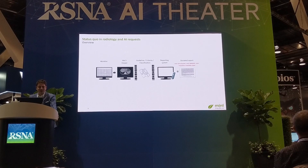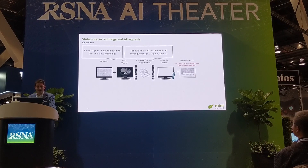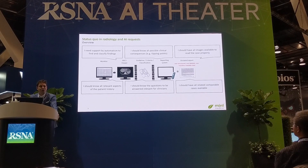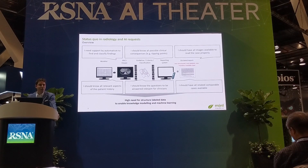In addition to this workflow, in recent years a lot of AI requests have emerged. For example: support by automation to find and classify findings, knowledge of clinical consequences like tipping points, access to all relevant images and patient history, the clinical question from referring physicians, and all related comparable cases. Whatever approach you take under the umbrella of AI — whether knowledge modeling or machine learning — they all require data. But in the current workflow, you do not generate structured data, and there is a high need for structured labeled data to enable those approaches.